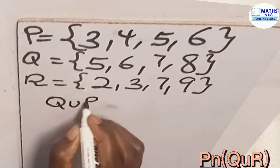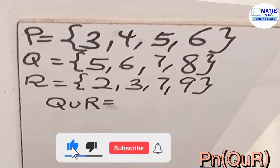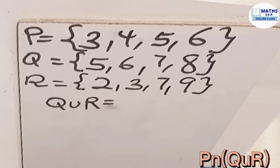Q union R. That means that members in set Q and then the members in set R which are written together. So let's write all the members in set Q and R together. Before doing this, note that whenever you see a number which is found in one set and that number is also found in the other set, we write only one. You won't repeat them.